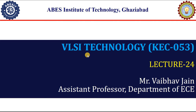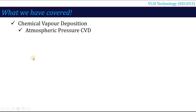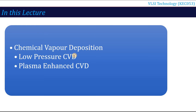Hello, welcome to the video lecture series of VLSI Technology. Subject code is KEC053, and here we are in lecture number 24. In the previous lecture we had started chemical vapor deposition methods to deposit film. We studied atmospheric pressure CVD as one type of reactor. In this lecture, we will continue with low pressure CVD and plasma enhanced CVD, which are the two reactors we are going to talk about.